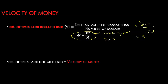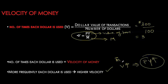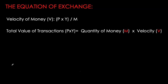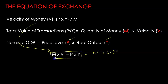Note that if we had not stopped after the third transaction and had more transactions, velocity would have been higher. The more frequently each dollar is used, the higher the velocity. An economy with the same money stock but higher velocity ends up with a higher total value of transactions. We can rewrite this as: value of transactions equals quantity of money M times velocity V. Since the value of transactions is nominal GDP — price level P times real output Y — we simplify to M times V equals P times Y. When written this way, we call it the equation of exchange.